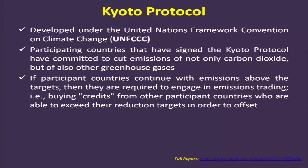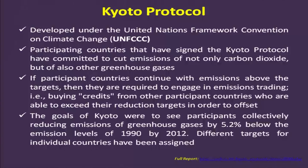The goal of the Kyoto Protocol was for participants to collectively reduce emissions of greenhouse gases by 5.2 percent below 1990 emission levels by 2012. Most countries should have achieved this target, and different individual targets were assigned to different participating countries.